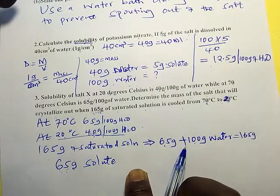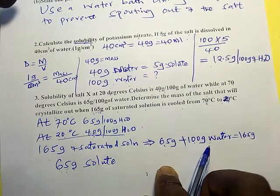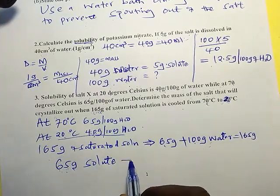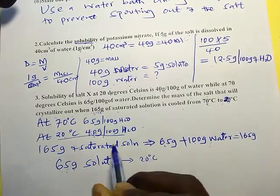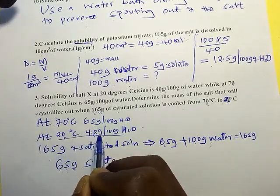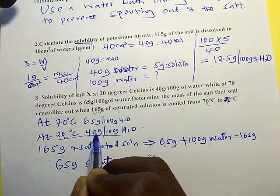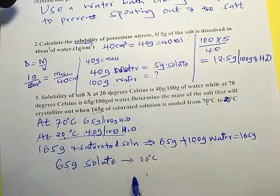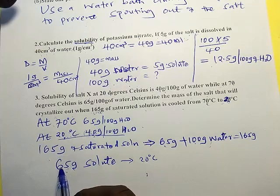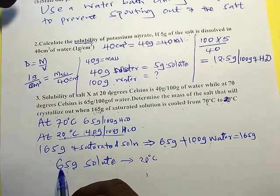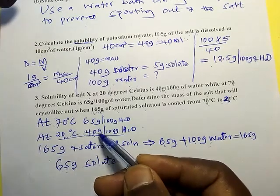What will be the mass that will crystallize out? At 20 degrees Celsius, the solubility is 40 grams per 100 grams of water. But we have 65 grams dissolved. Now it is more than what should be there.